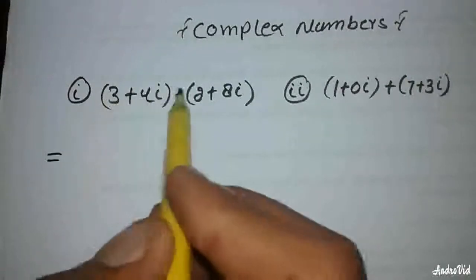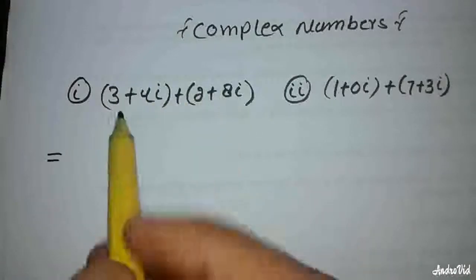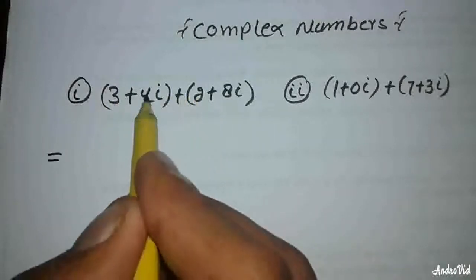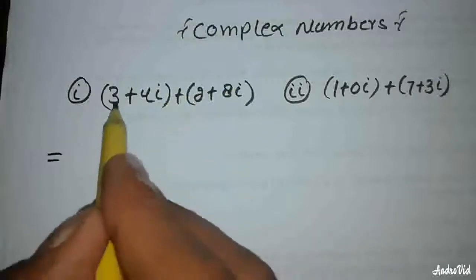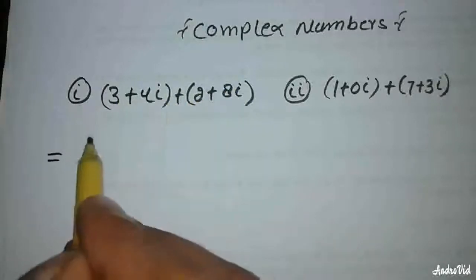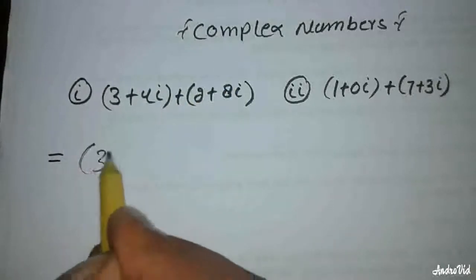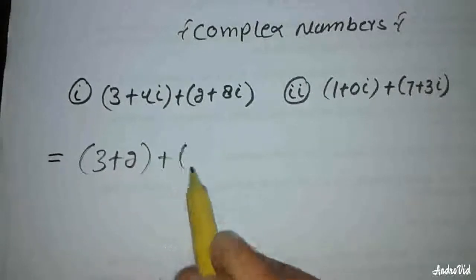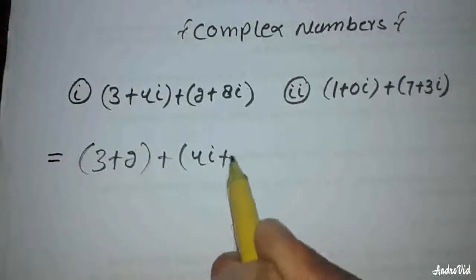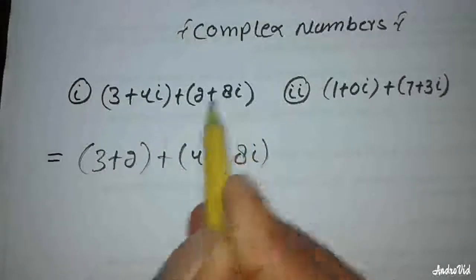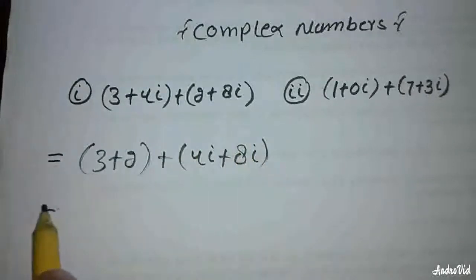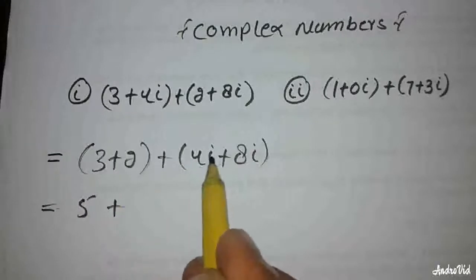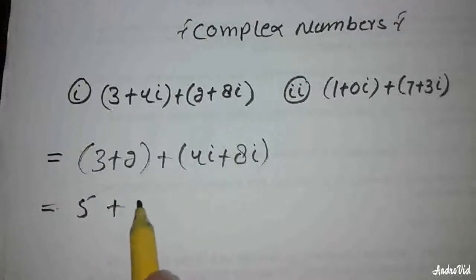The rule is: real parts are added with real parts, and imaginary parts with imaginary parts. So 3 plus 2 gives the real part, and 4 iota plus 8 iota gives the imaginary part, resulting in 5 plus 12 iota.